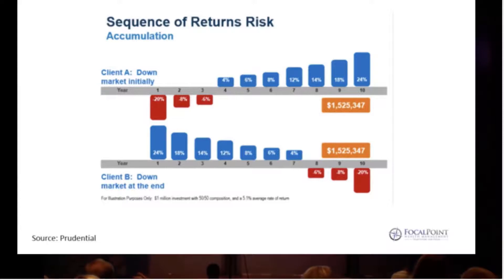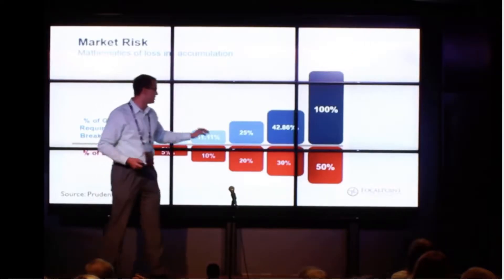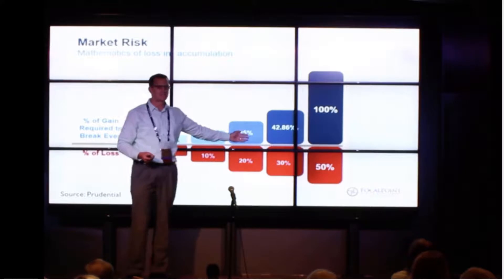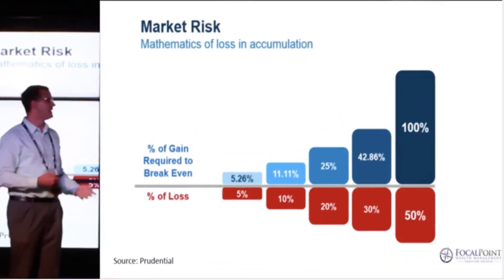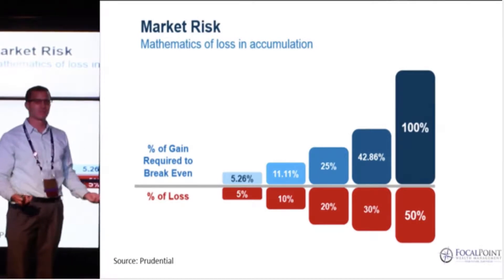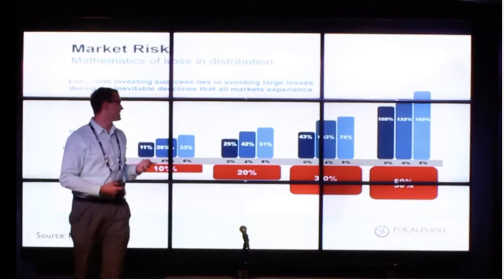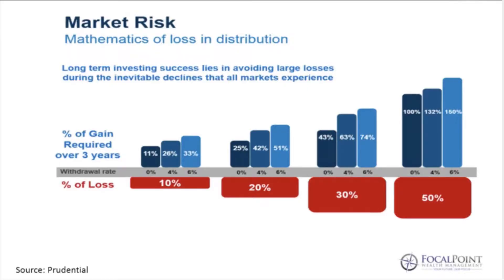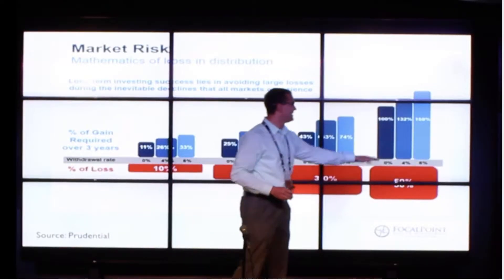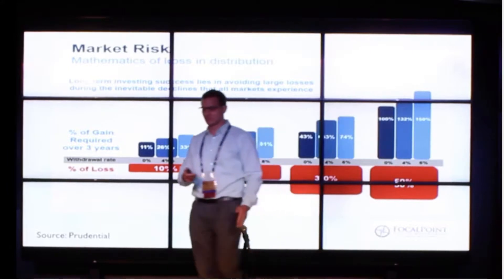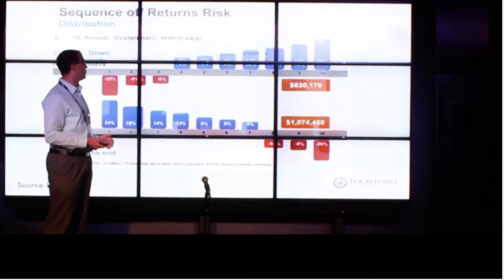However, when you start introducing losses into the equation — if you go down 20%, you have to go back up 25% to get back to even. If you go down 50%, you have to go up 100% to get back to even. But what people are not as familiar with is: if you're withdrawing 4% — say you've got a million dollars and you're taking $40,000 a year out to live on — if the market goes down 20%, you've got to go up 42% over the next three years to get back to even. And if you go down 50%, you actually have to go up 132% just to get back to even.